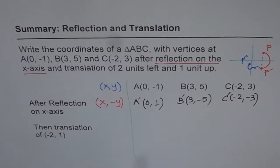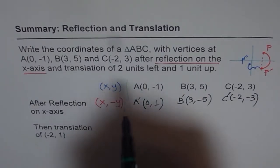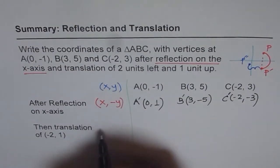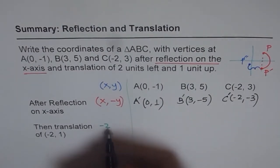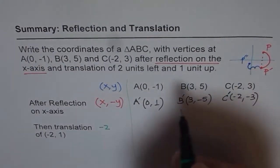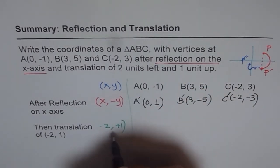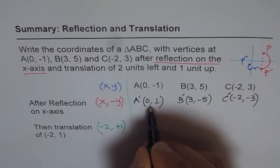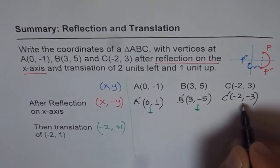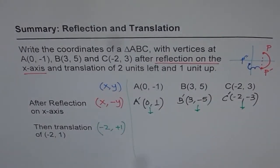And now, let's think about translation. Now when you translate, what is happening? Two units left, that means minus two. So you move two units left. And one up, that means for y, it was plus one. So this is what we are going to do here to get our final points. So let's write down our final points now.